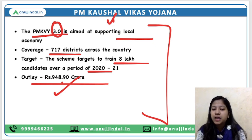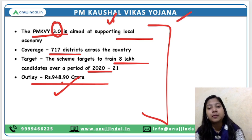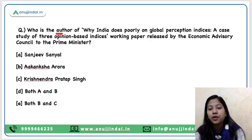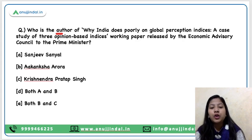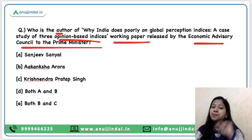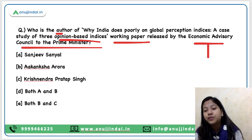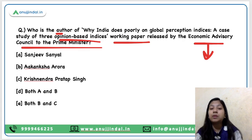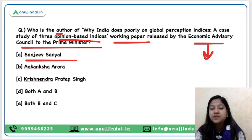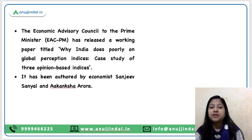That was all about the Pradhan Mantri Kaushal Vikas Yojana and the Mission Karm Yogi's Prarambh module. Now moving on to question number two. Before giving the answer, my question for all of you is: tell me the head of the Economic Advisory Council to the Prime Minister as of now. Coming back to the news — the authors are Sanjeev Sanyal and Akansha Aroda, and the right answer is option D. It's a working paper, a kind of research paper.